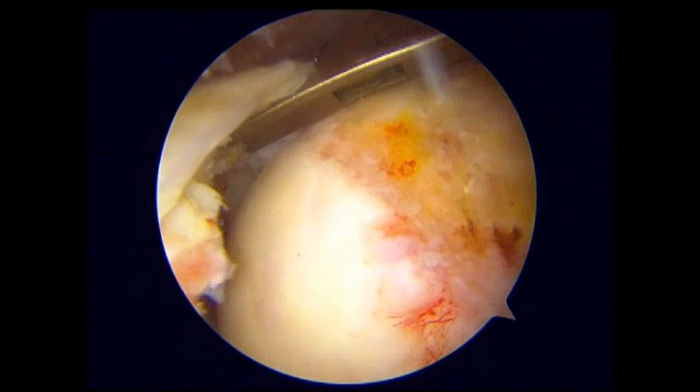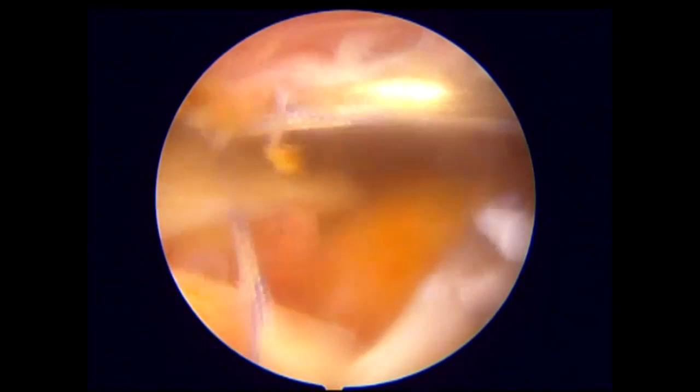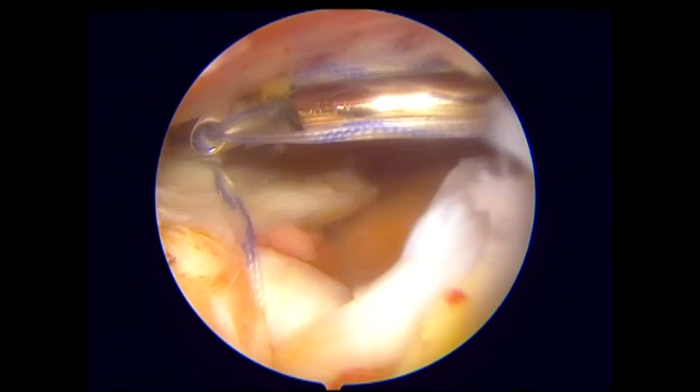Suture is then passed anteriorly at the point corresponding to the terminal point of the first margin convergence repair vector. I often use an adjustable sliding suture initially in order to better judge if the margin convergence suture is ideally positioned. In the case of sub-optimal placement, it is crucial to reposition, or else the tendons will be locked in a position that will not allow for complete anatomic repair of the rotator cuff.